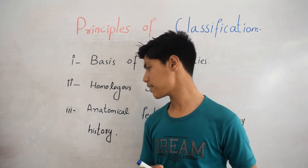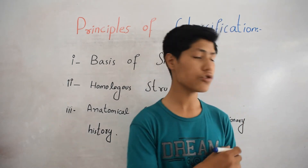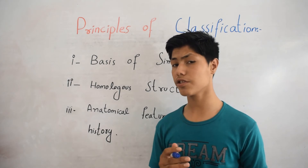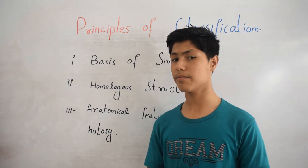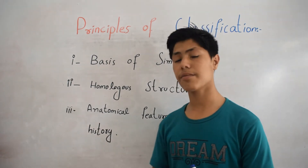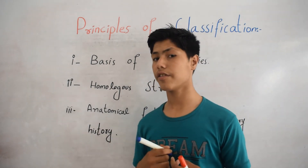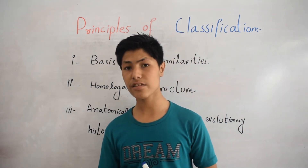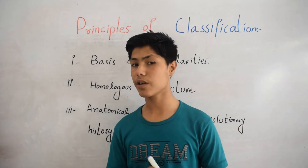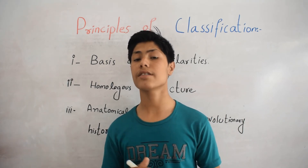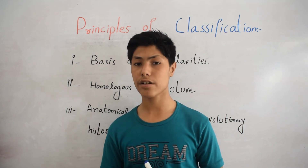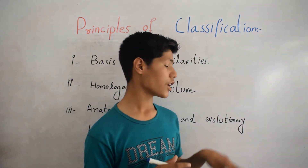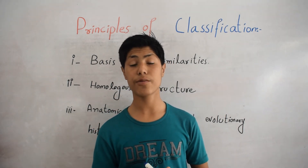The third principle is anatomical features and evolutionary history. Organisms are also classified on the basis of anatomical features and evolutionary history. Anatomical features refer to internal structure — if organisms share the same internal structure, they are classified into one group. Similarly, if organisms share the same evolutionary history, they are classified into one group.